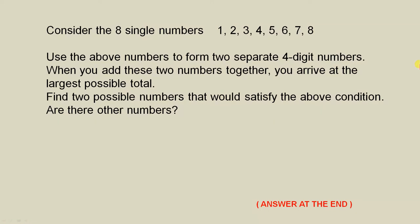Consider the eight single numbers 1, 2, 3, 4, 5, 6, 7, 8. Use the above numbers to form two separate four-digit numbers. When you add these two numbers together, you arrive at the largest possible total. Find two possible numbers that would satisfy the above condition. Are there other numbers? Answer at the end.